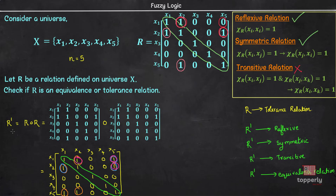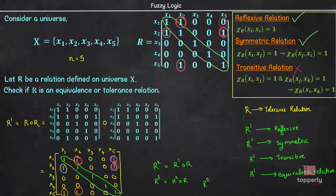Suppose R1 was not an equivalence relation — then you would perform composition again: R2 = R1 ∘ R, and if R2 is also not an equivalence relation, perform composition again: R3 = R2 ∘ R. Since the cardinality of universe X is 5, it is guaranteed that you will get an equivalence relation on or before R4 (that is, at most N-1 = 4 compositions), provided that R is a tolerance relation.